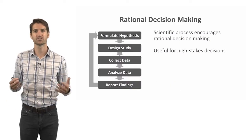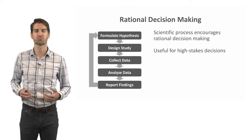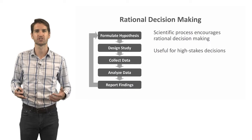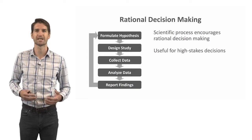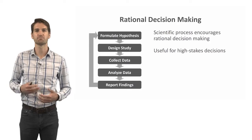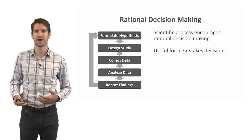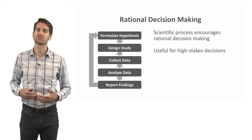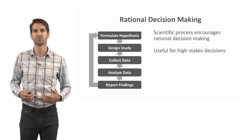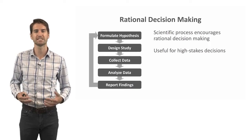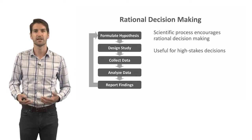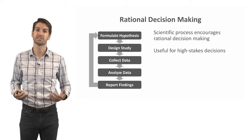The rational decision making model is one rigorous approach we can take to ensure better decisions in high-stakes situations. The scientific process is an important way to inform rational decision making, because it is based in empiricism—the idea that knowledge is based on evidence or data.